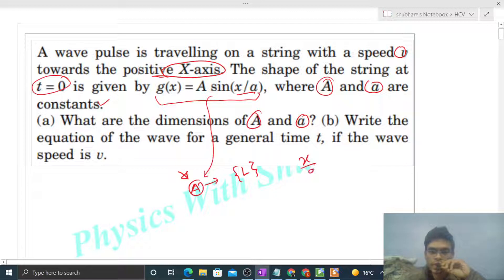Similarly, x upon a, jo sine ke andar hai, ye dimension-less hona chahiye. X kya hai? Distance, right? So a ka v jo unit hoga, that will be length, so that ye jo x upon a hai, ye dimension-less ho jaye.